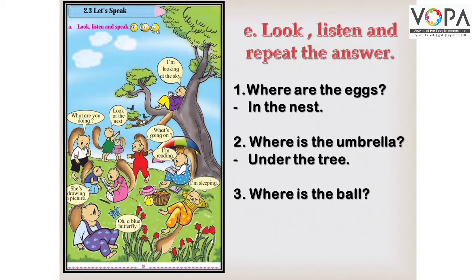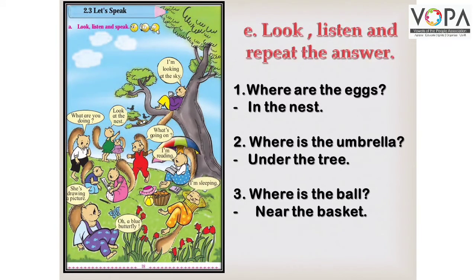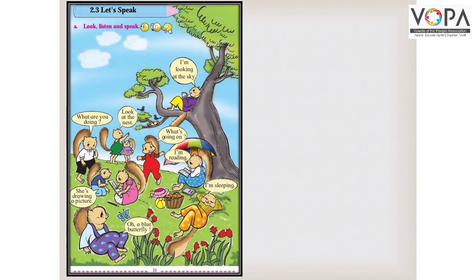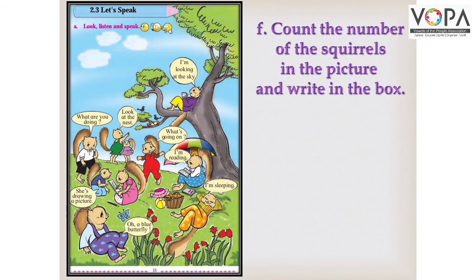Where is the ball? Ball कहाँ है? Near the basket. Repeat after me: Near the basket. On page number 18, Point F: Count the number of squirrels in the picture and write in the box. प्यारे बच्चों, आपको यहाँ पर जितनी squirrels नज़र आ रही हैं, आपको उन्हें count करना है, गिनना है और उनका number इस box में लिखना है जो कि आपकी textbook में भी दिया हुआ है।